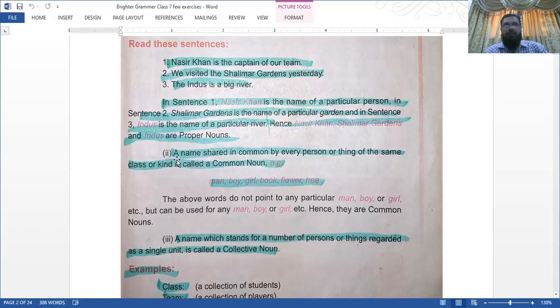Number two: a name shared in common by every person or thing of the same class or kind is called a common noun. For example: man, boy, girl, book, flower, tree. You see, these are ordinary common names. Every one of you is a boy or a girl, and your father is a man. The above words do not point to any particular man, boy, or girl, but can be used for any. They are common nouns.